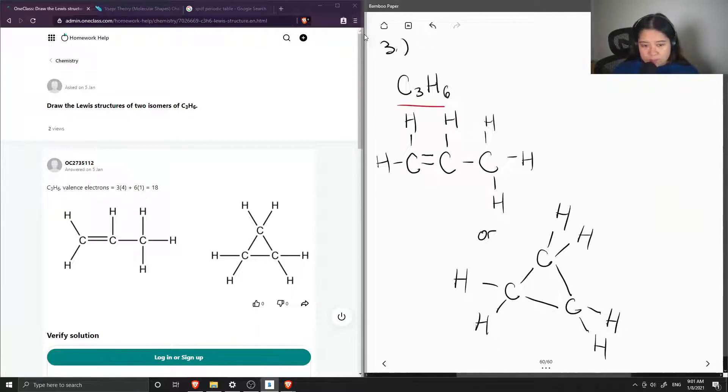Now let's count out—we have three carbons and six hydrogens. This is also a valid structural isomer of C3H6.